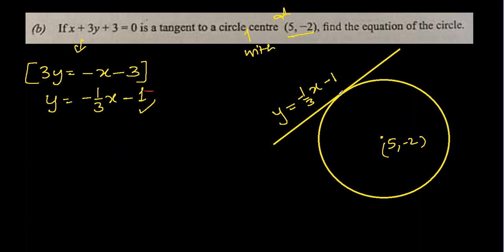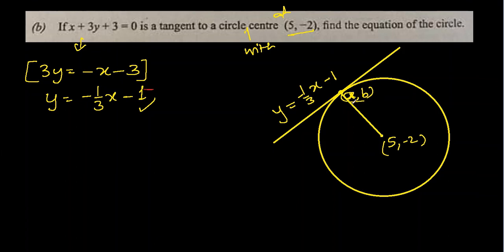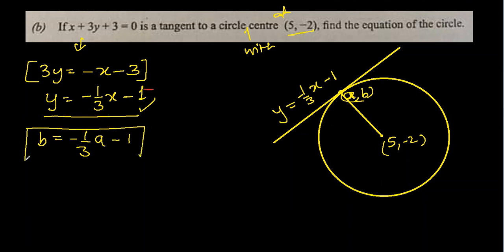Let's say the point where the tangent touches the circle is (a, b). If we join (a, b) to the center, that distance will equal the radius. The point (a, b) lies on the tangent, so substituting: b equal to minus one-third a minus 1. This gives us a relationship between b and a. The gradient of the tangent is minus one-third.